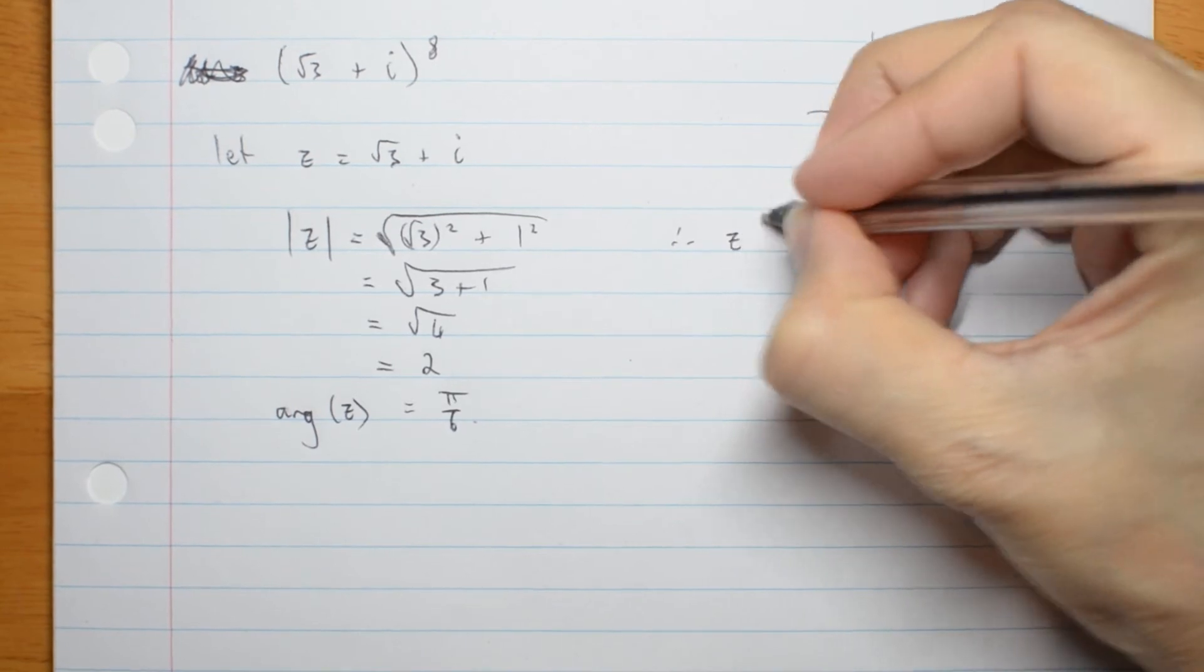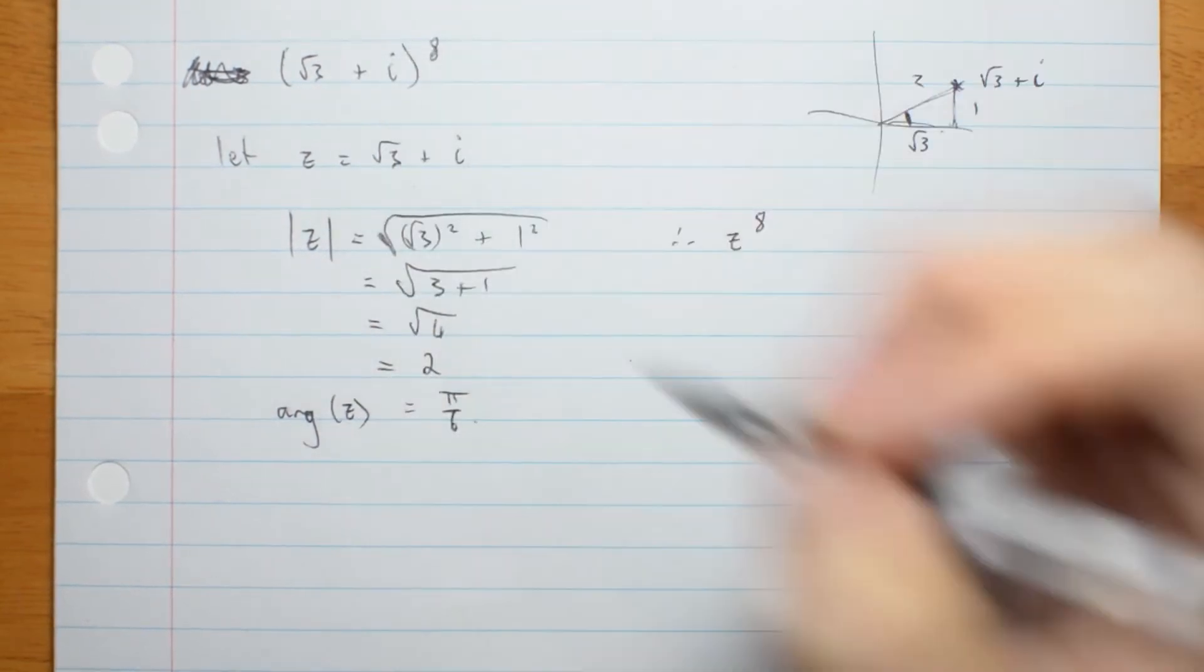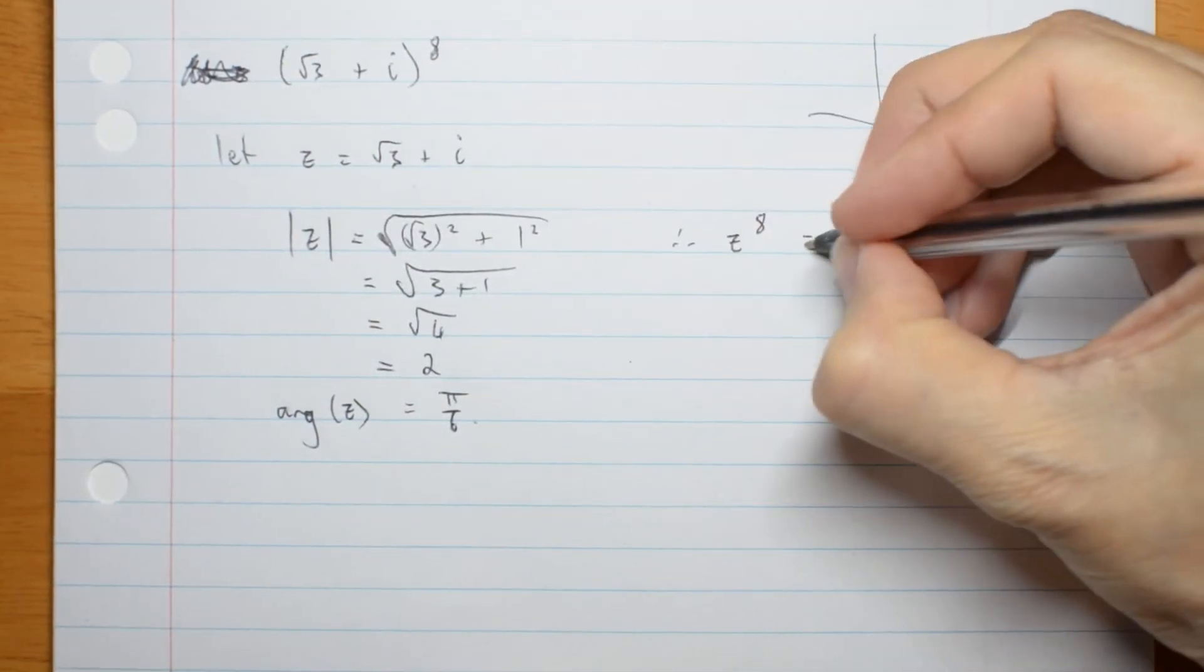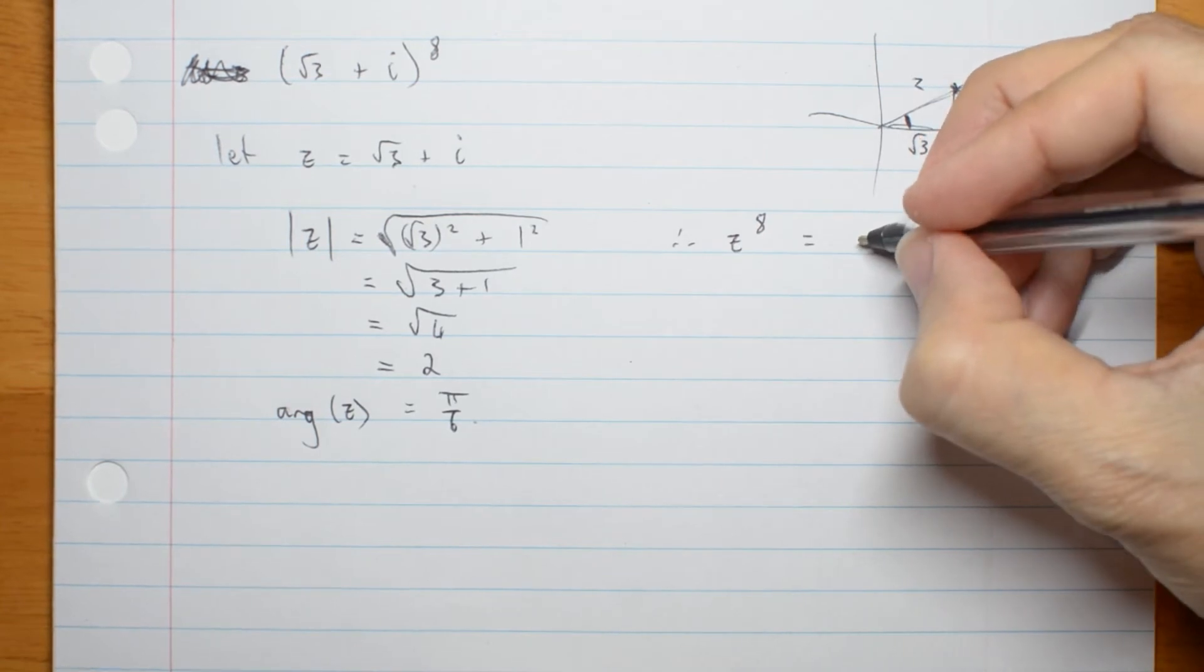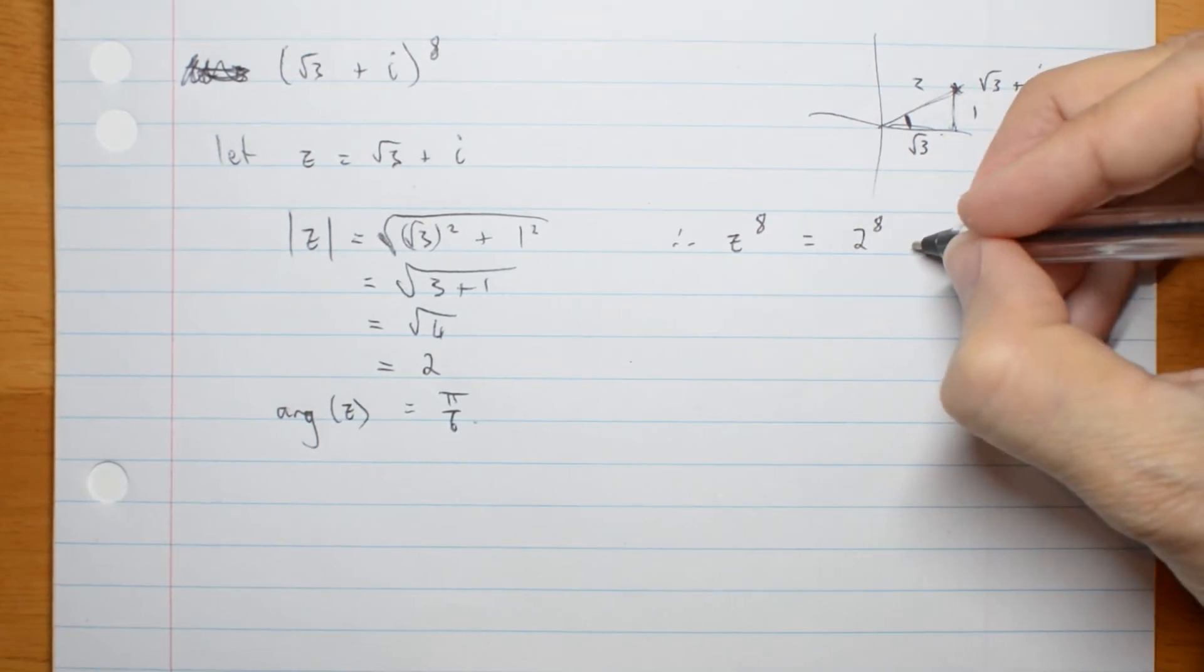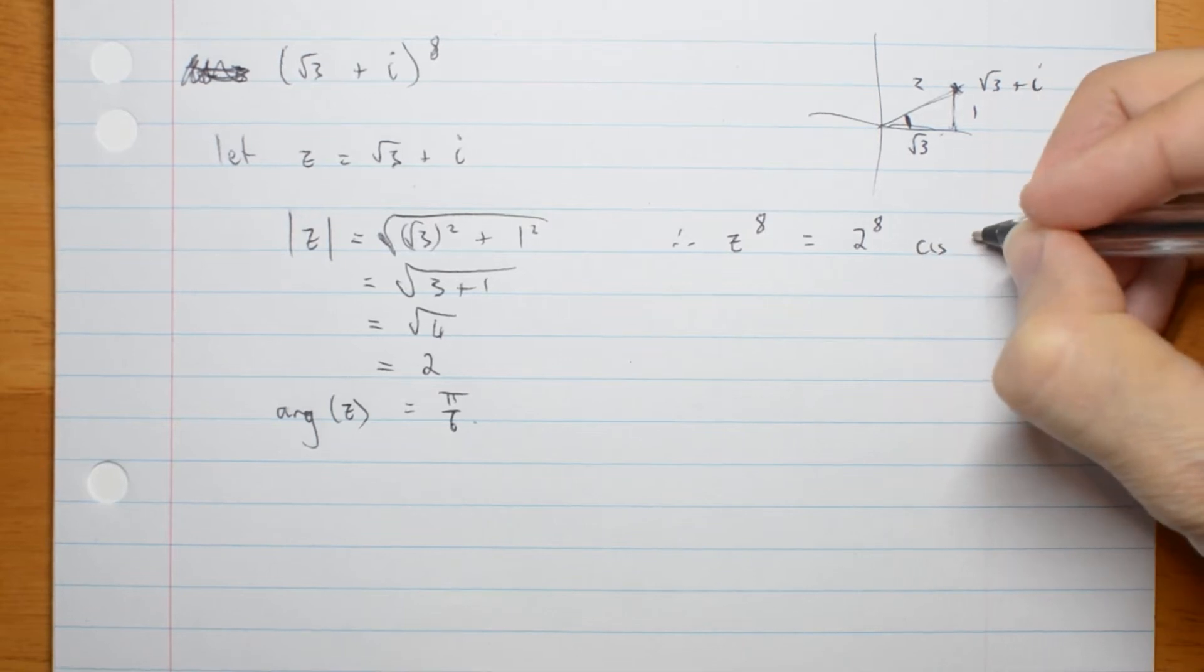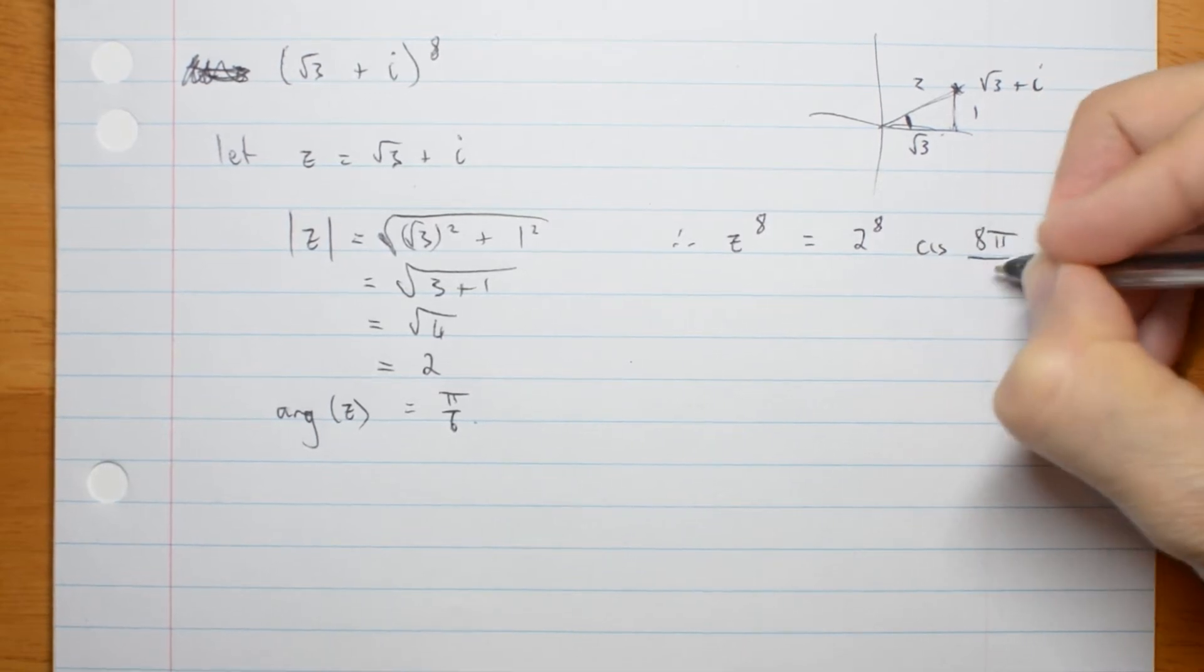Therefore, z to the 8, what we actually wanted to find, is equal to 2 to the 8 times cis 8 pi on 6.